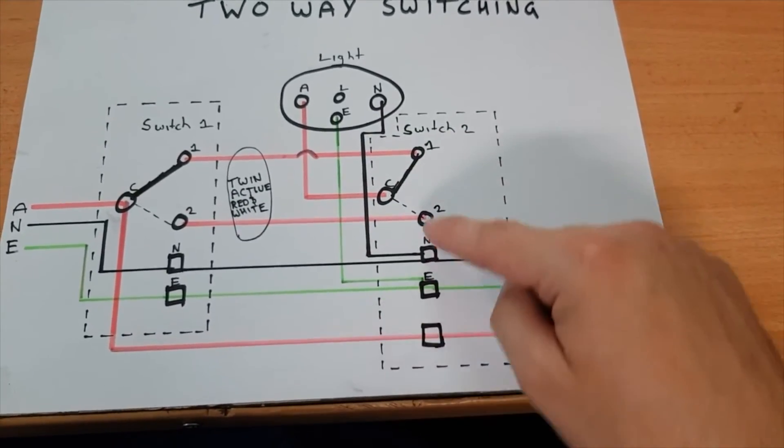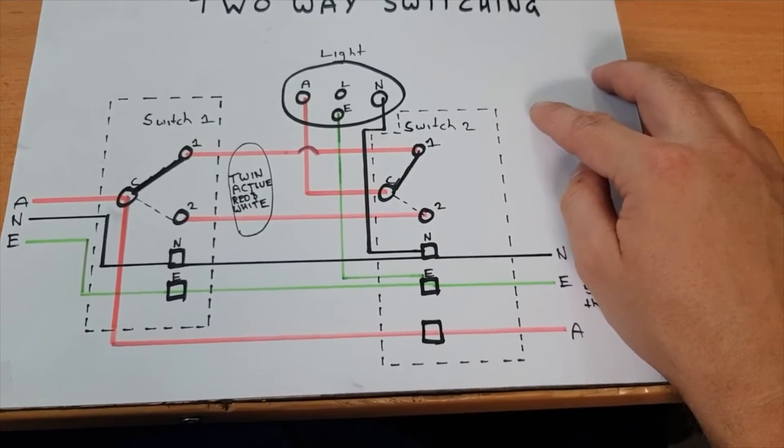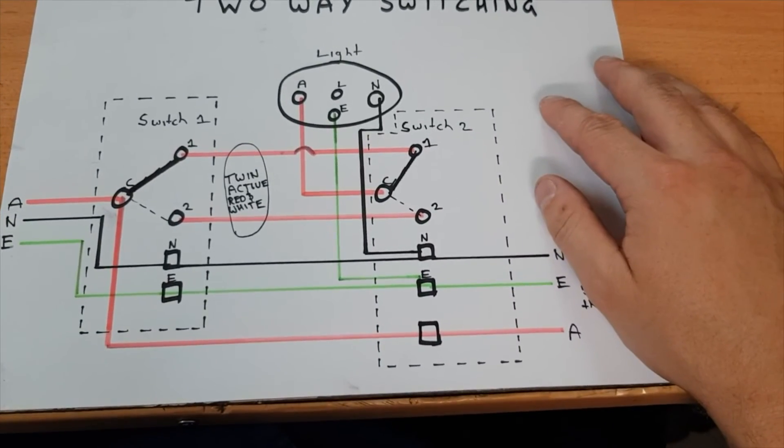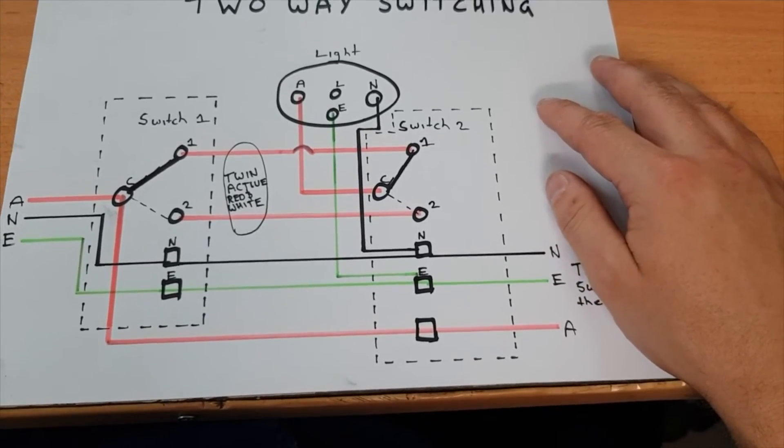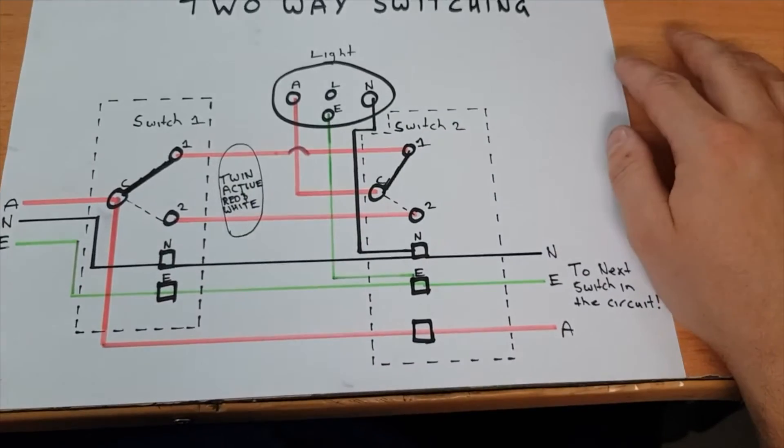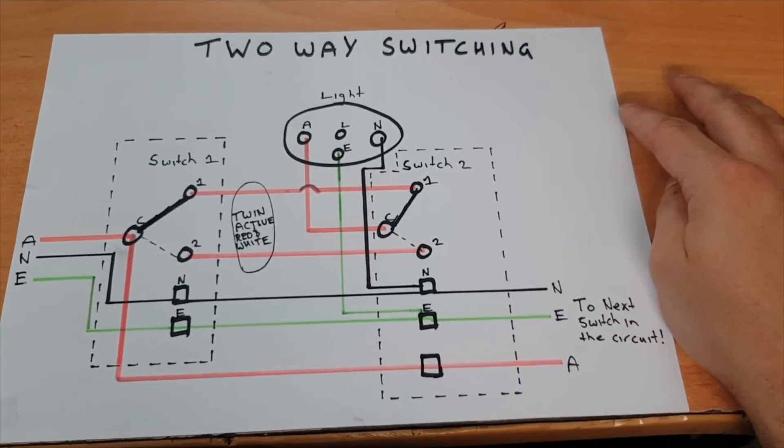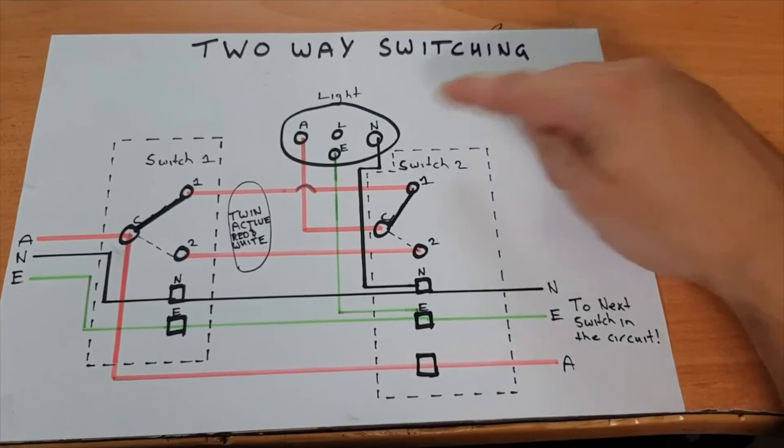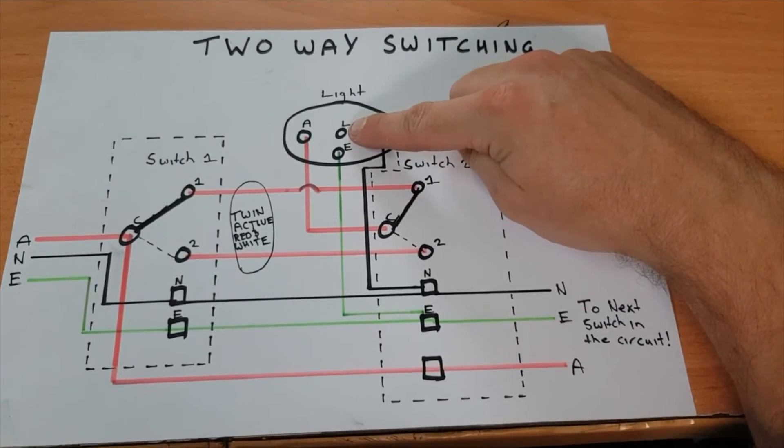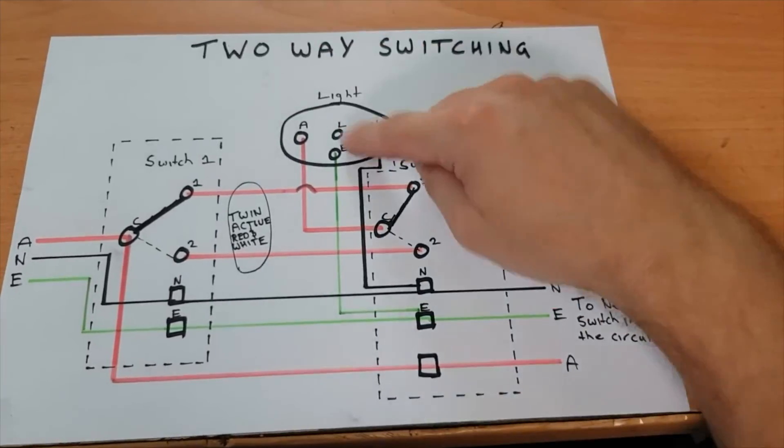Generally you just have to have a twin and earth, one mil or 1.5 mil. I'll explain that in my last video as well, the difference between looping at the light and the switch. That's pretty much it guys. This looping terminal here isn't used because obviously we're looping at the switch, not the light.